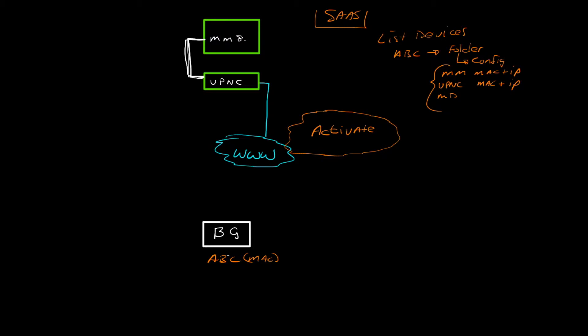What does the Mobility Master do effectively? The Mobility Master sends a final configuration — that's what we work with. The Mobility Master controls the configuration. If you know Mobility Master just a little bit, you'll know they have a folder structure, and based on where you sit in that folder structure, you get a specific configuration. Configuration changes can be made in the folder structure.